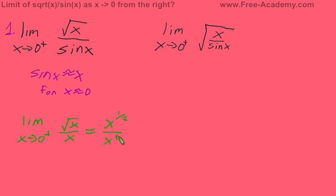Now, dividing out your exponents is the same as subtracting them. So you have x to the 1/2 minus 1.